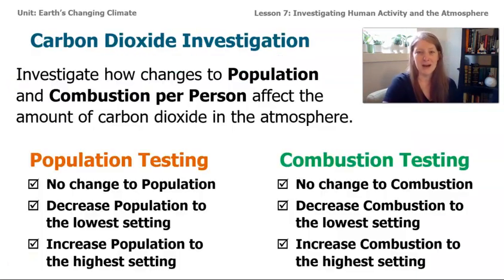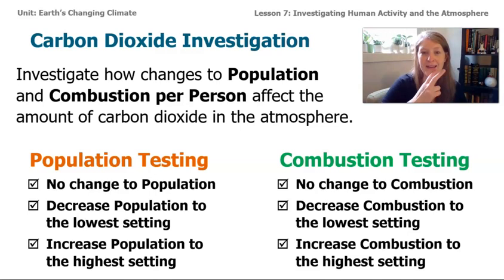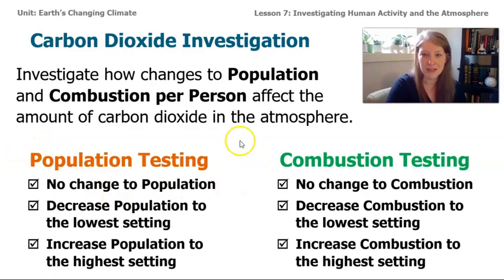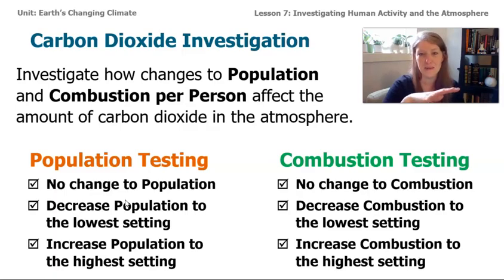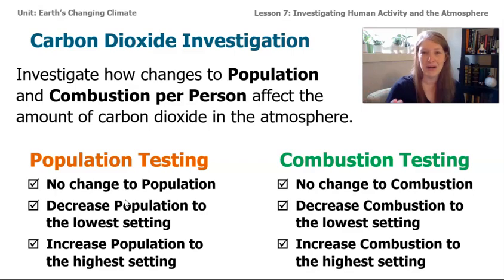We're going to look at two different things: carbon dioxide and methane. For the carbon dioxide investigation, the two things that affect carbon dioxide in the sim are the population of humans and combustion per person. We'll investigate these two things with three different settings: no changes to the population, then decrease population to the lowest setting, then increase it to the highest setting, and see how each affects the amount of carbon dioxide in the atmosphere.